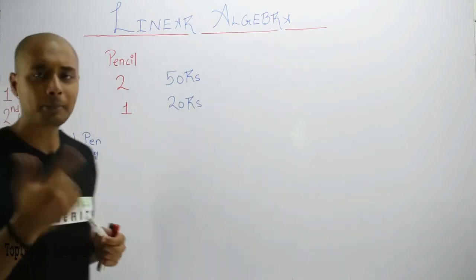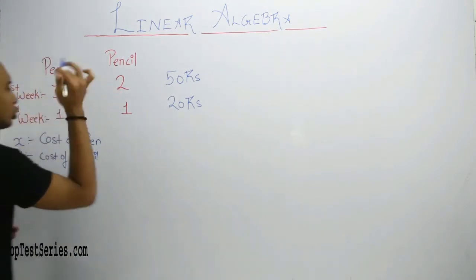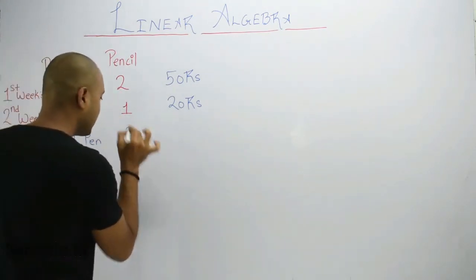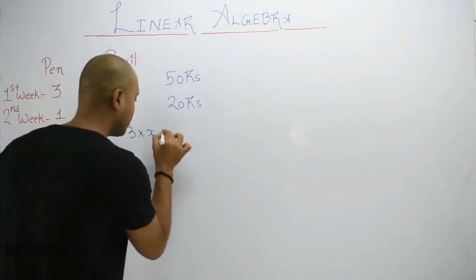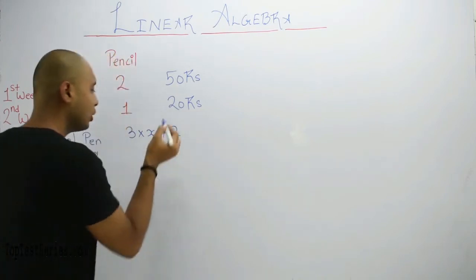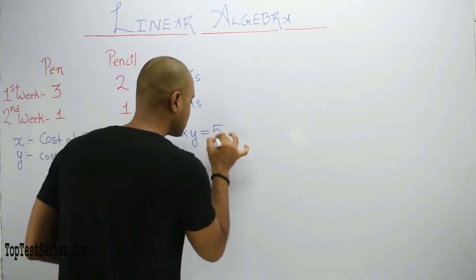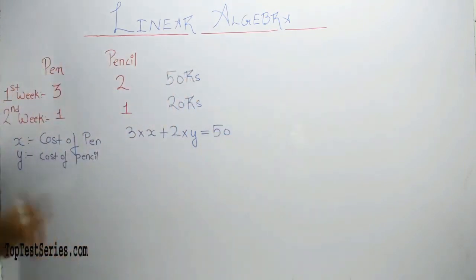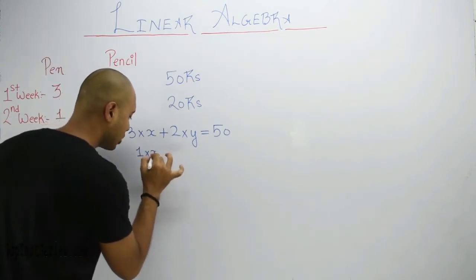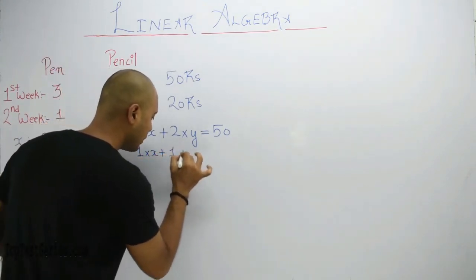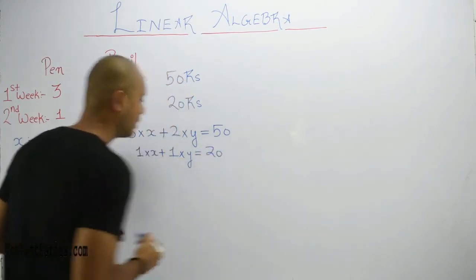Toh ab, simple — equation likhenge. Pehle week mein haam 3 pen aur 2 pencil lekha hai, toh 3 pen into uska cost, plus 2 pencil into uska cost — kitta huwa total? Total huwa sir 50 rupees, right? Vaisa hi, second week ke bhi likhenge — ki 1 into x (number of pen) plus 1 into y (number of pencils) toh 20 rupees, right?